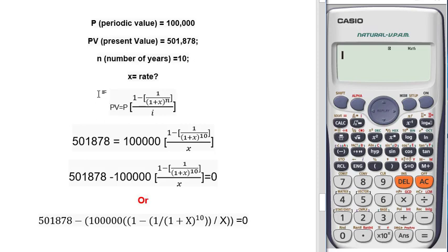This is the formula for present value of ordinary annuity. If we put all the values, it will be like this line. Here this is the present value, this is our periodic value, and we have put here 10 which is equal to number of years.